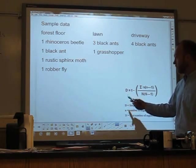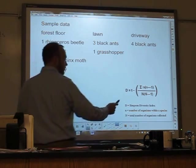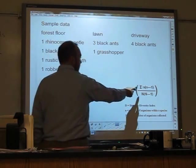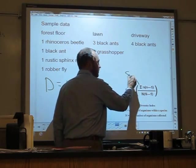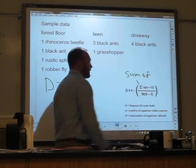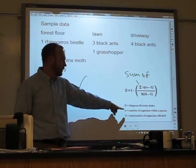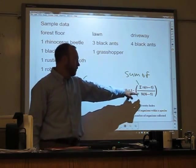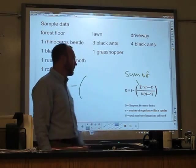D stands for diversity. And to calculate my diversity, I'm going to do one minus the sum. So the sigma here means the sum of n, and little n is the number of organisms within a species, times n minus one, over capital N, which is the number of organisms collected, times N minus one.